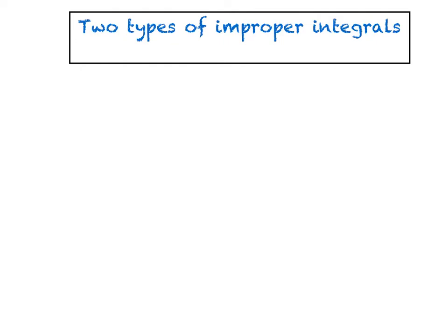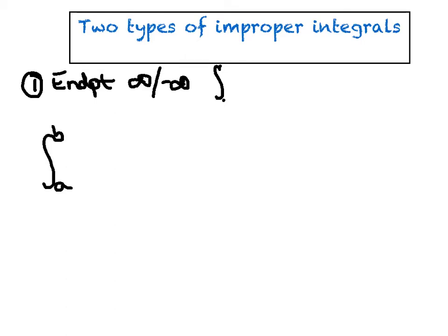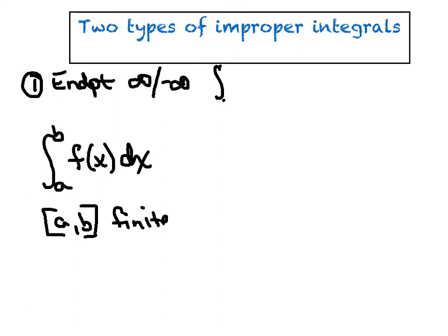There are two primary types of improper integrals, and we're going to split this into a two-day lesson. Back when we first started doing definite integrals, there were basically two prerequisites: first, the interval a to b had to be a finite interval, and second, the function itself had to be completely continuous within the interval a to b. An improper integral is one that violates either the first condition or the second condition, or perhaps both.